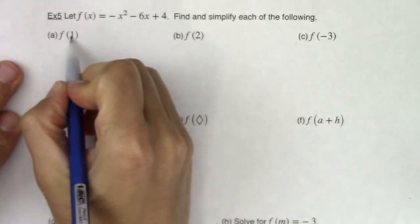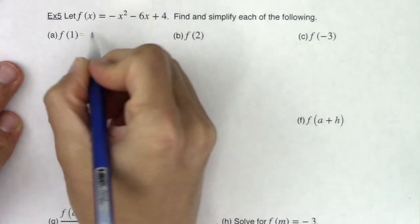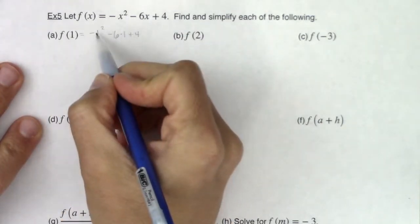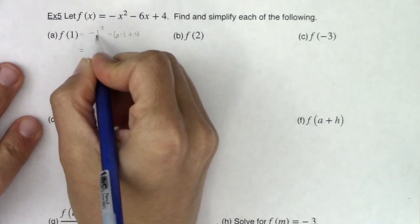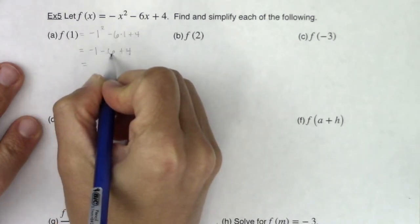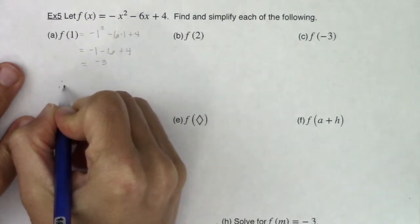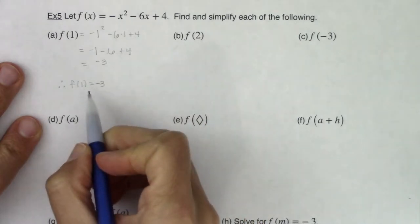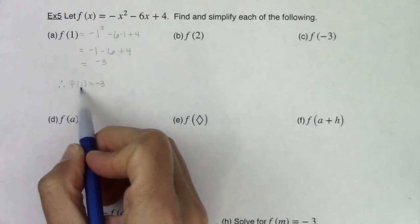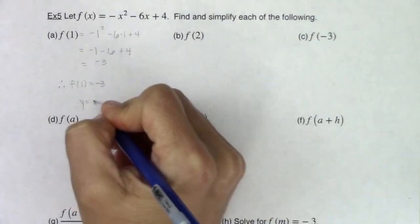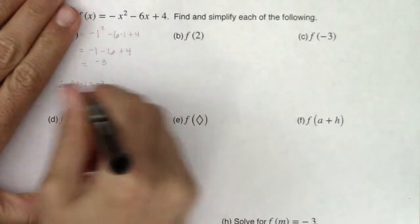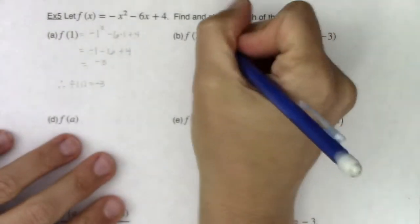Using function notation, I see 1 is in the parentheses so I substitute 1 wherever I see x: negative 1 squared minus 6 times 1 plus 4. Using PEMDAS, 1 squared is 1, negative 1 times positive 1 is negative 1, minus 6 times 1 is minus 6, plus 4. So negative 1 minus 6 is negative 7, and negative 7 plus 4 is negative 3. So f(1) = -3. One advantage of function notation is you can see both the x value and y value — f(1) = -3 tells you both.